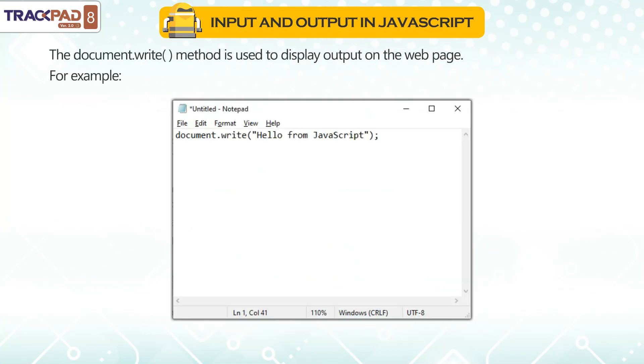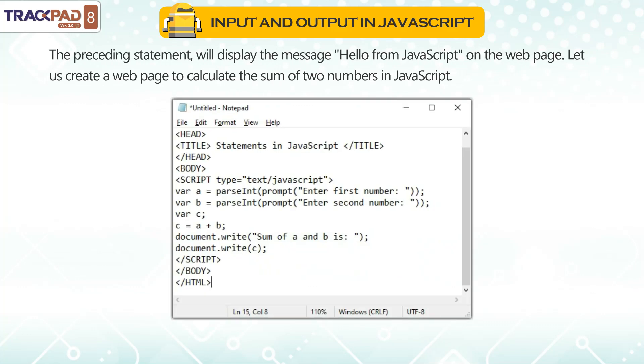The document.write() method is used to display output on the web page. For example, the preceding statement will display the message 'Hello from Javascript' on the web page. Let us create a web page to calculate the sum of two numbers in Javascript.